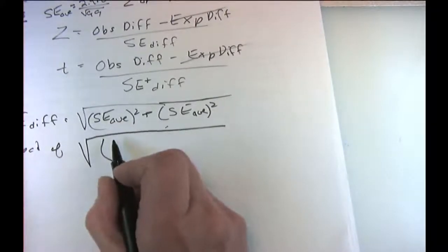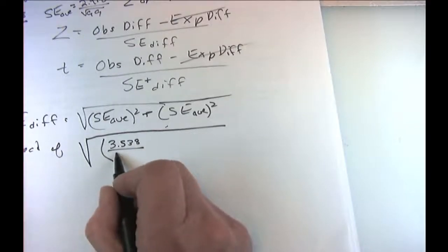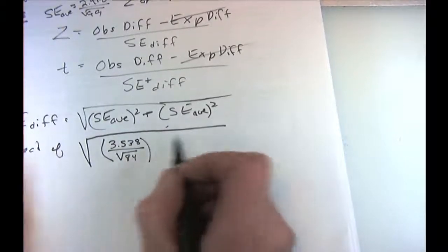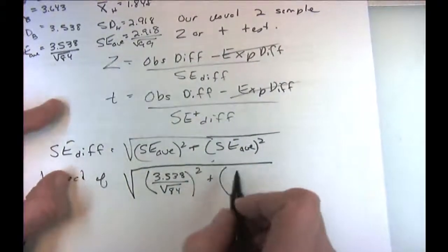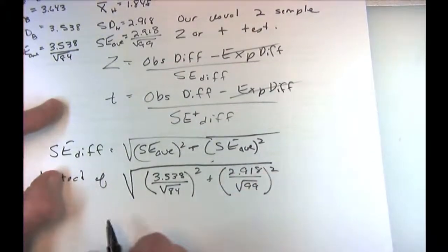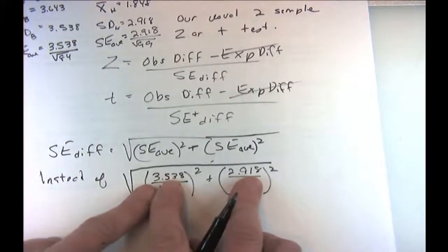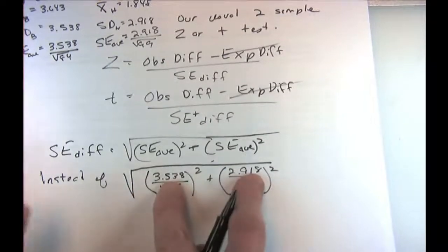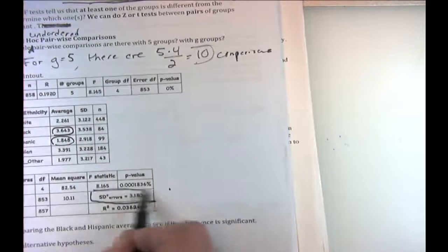The Bonferroni-corrected p-value is 0.1521%. The number of pairwise comparisons is g times (g minus 1) over 2, which for 5 groups equals 10. This adjusted p-value is still significant but accounts for the fact we cherry-picked the most extreme difference.